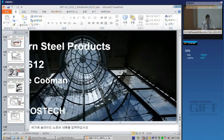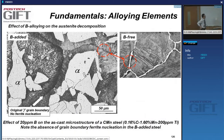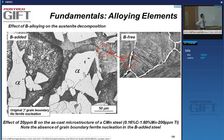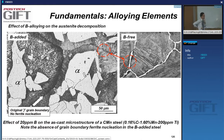I'll say a few things about where we stopped last week. We were talking about alloying elements — chromium, molybdenum — and we were discussing the impact of boron.